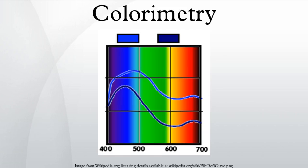Colorimetry is the science and technology used to quantify and describe physically the human color perception. It is similar to spectrophotometry, but is distinguished by its interest in reducing spectra to the physical correlates of color perception, most often the CIE 1931 XYZ color space tristimulus values and related quantities.